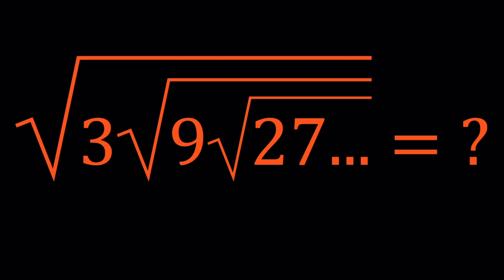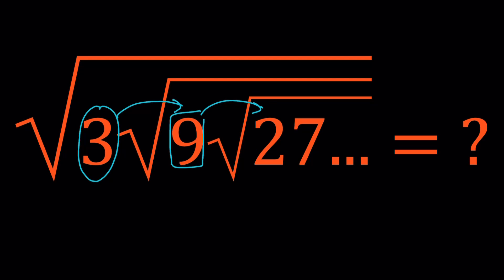You might think about taking that 3 and throwing it inside the radical — obviously it becomes 3 squared under the radical, and then there's another 3 squared making 3 to the fourth power, and then you throw that inside. But that's supposed to be 3 to the eighth power, and we have 3 to the third power, making 3 to the eleventh power. So as you go to the right, you're collecting higher powers of 3, plus a bunch of nested radicals. That doesn't seem like a good method.